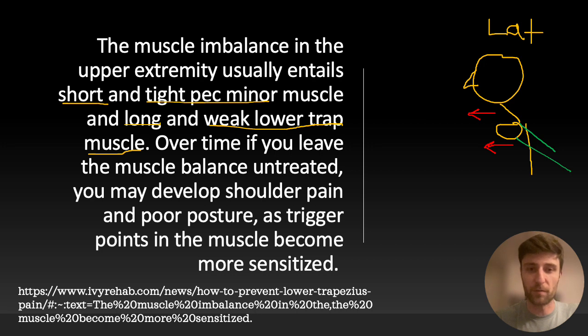Let's draw a little circle right there. Pec minor is tight and short. So long, weak trap in the back, tight, short, possibly strong pec minor in the front.